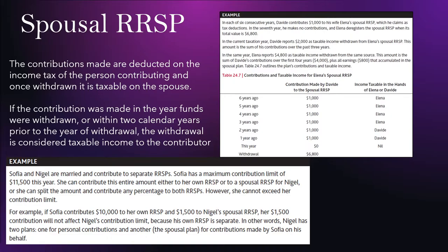A spousal RRSP is another type of RRSP where contributions are deducted on the income tax of the person contributing, and once withdrawn it is taxable to the spouse. One spouse contributes, gets the tax deduction, and it becomes the other spouse's RRSP. When the spouse withdraws, they claim that income. Basically it is a way of splitting income between partners and is helpful for tax purposes.